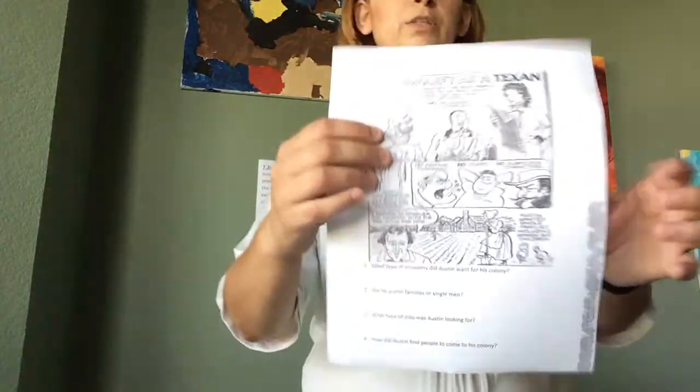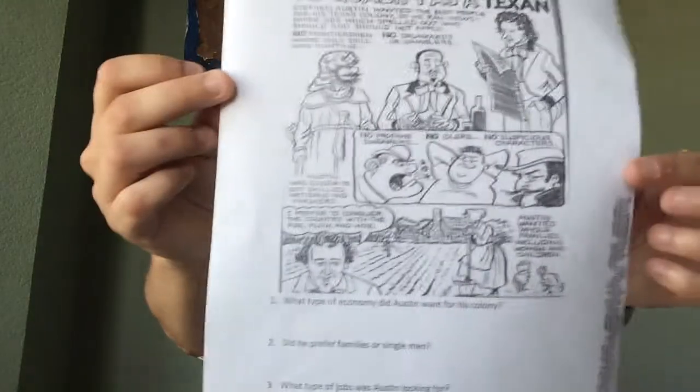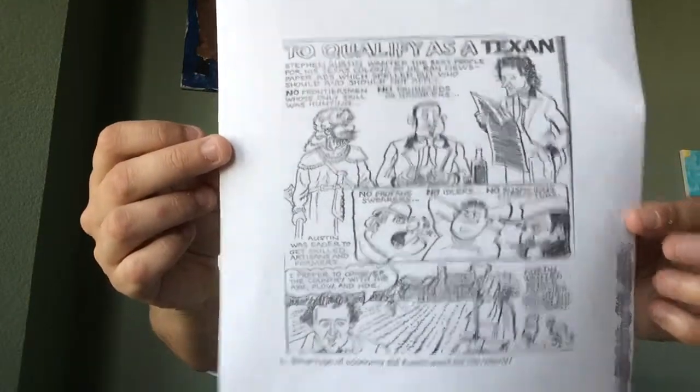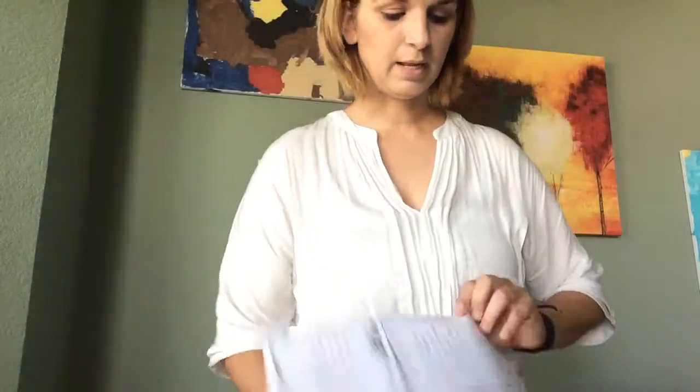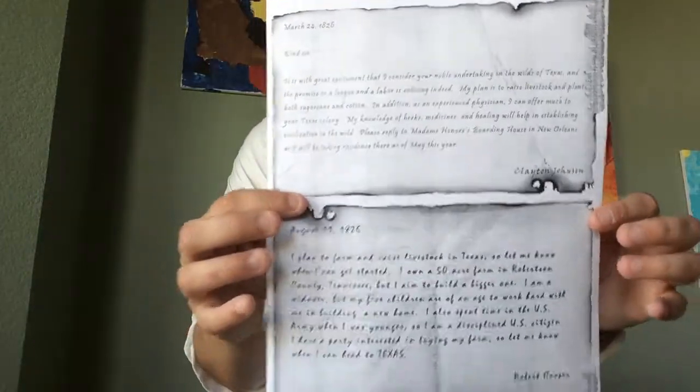First off, we'll go through these worksheets and images I'm going to be using. I have 15 of these. These are letters from supposed colonists applying to Austin, or being accepted into his colony.